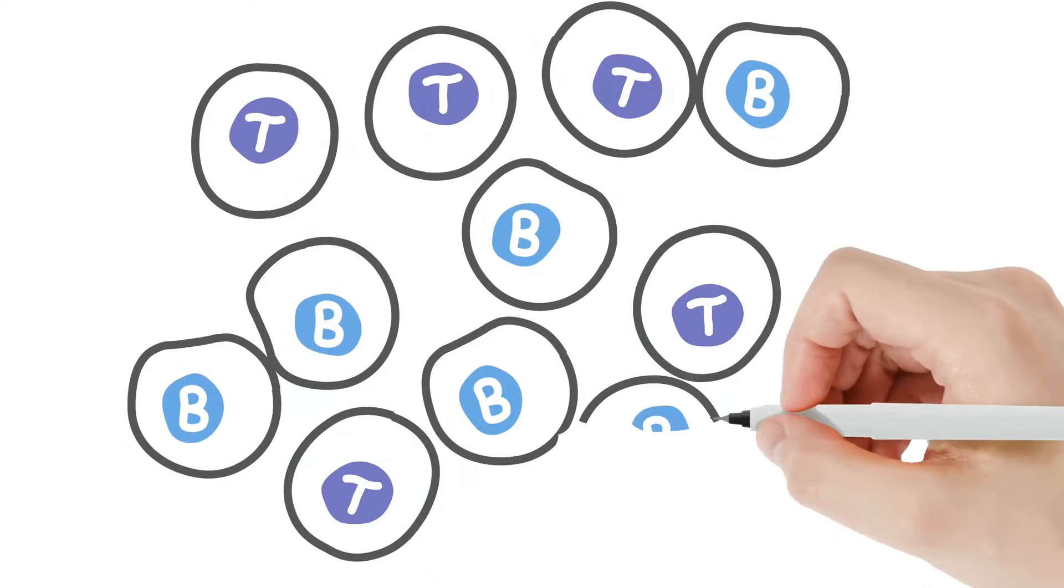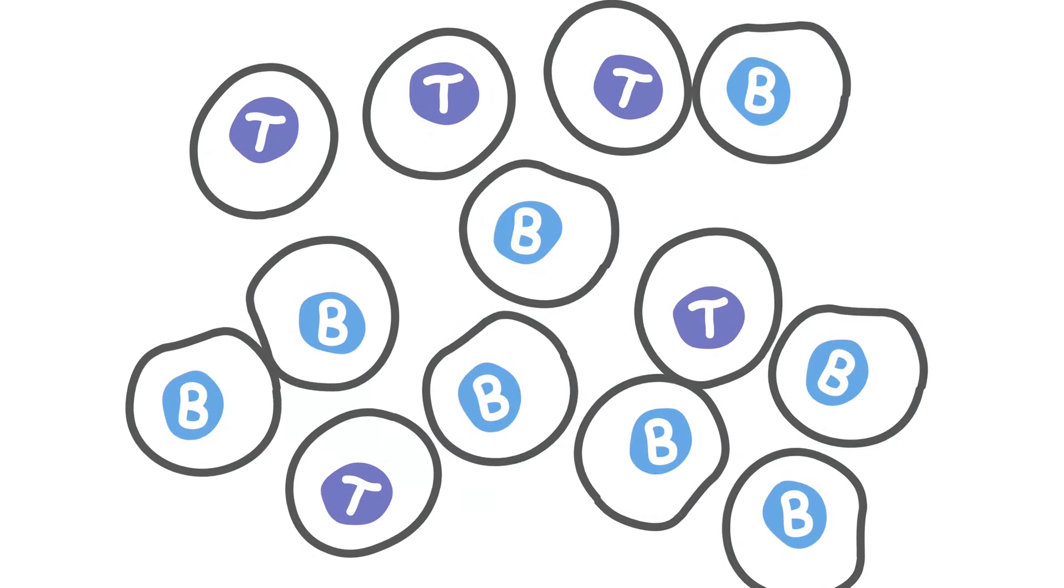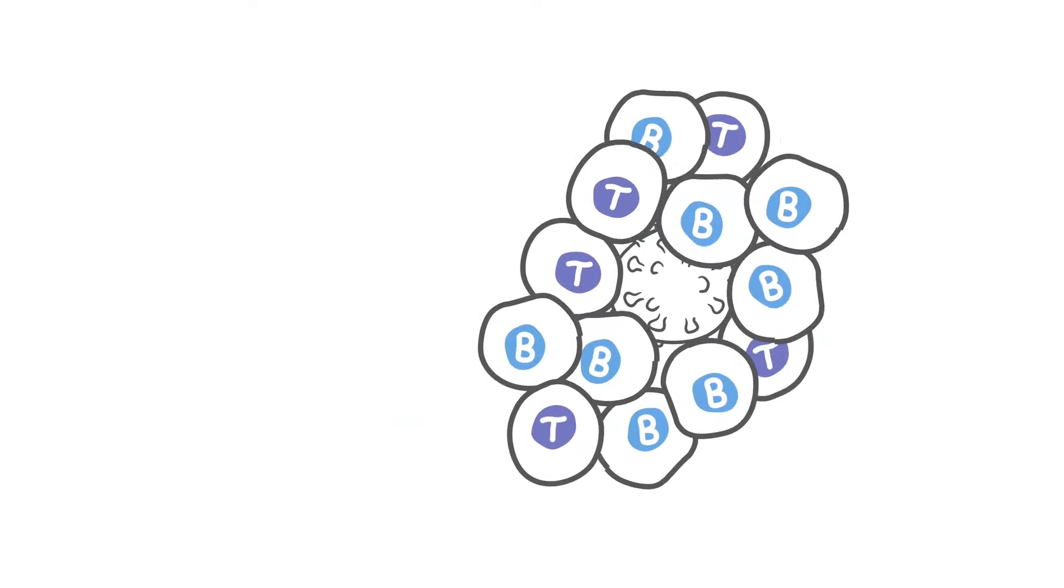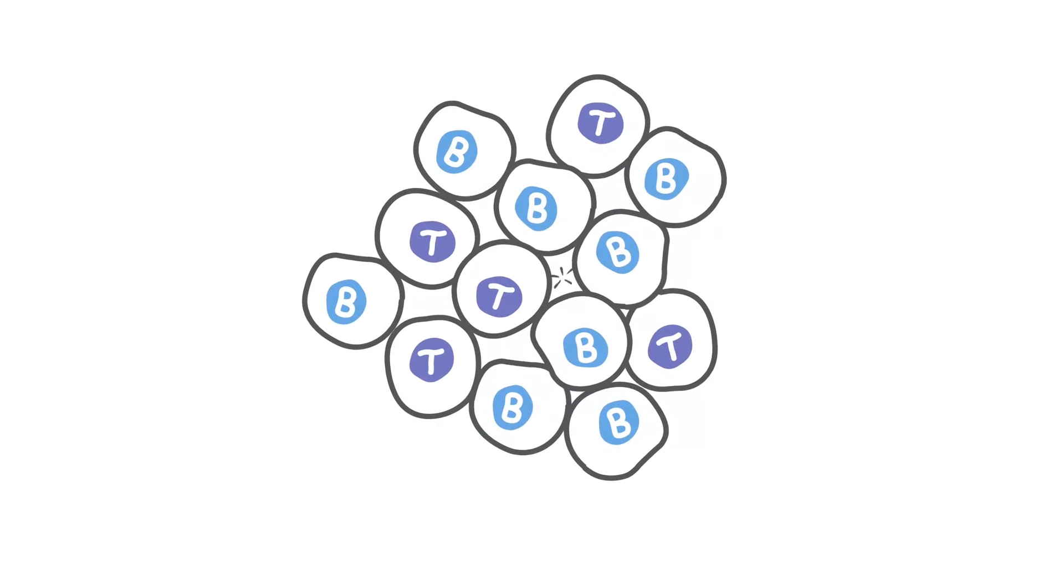In healthy individuals, the body produces a diverse array of B and T cell clones whose job is to recognize, attack, and remember foreign invaders.